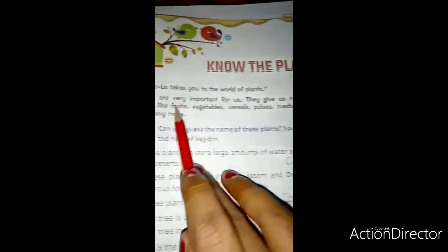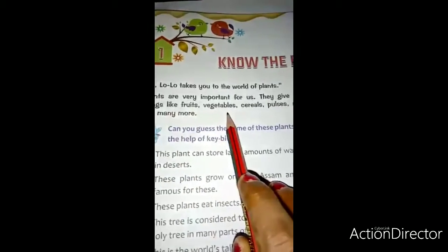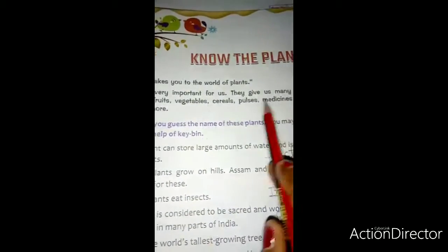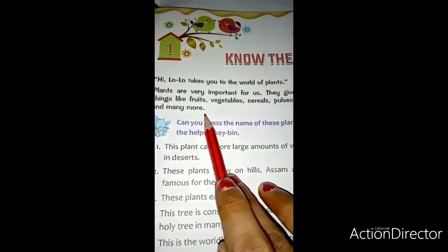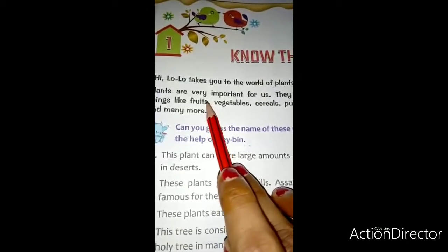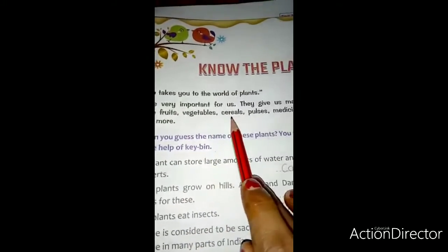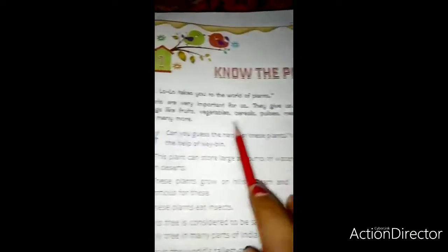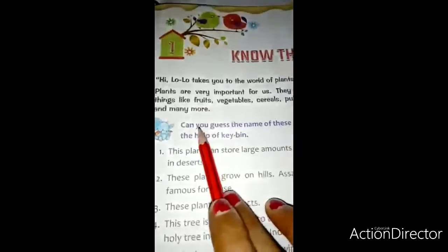They give us many things like fruits, vegetables, cereals, pulses, medicines and many more. वे हमें बहुत सारी चीज़े देते हैं, जैसे कि फल, सबजी, अनाज, डाल, दवा और भी बहुत कुछ.